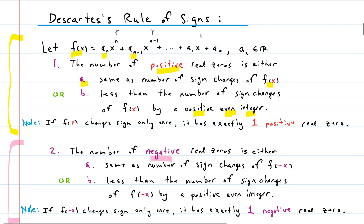One last side note: if f changes sign only once, it has exactly one positive real zero. Now let's look at the negative real zeros. The cool thing is it's very similar to what we just discussed for the positives, with one slight change: you take f and you plug in negative x for all of the variables. Then you do the same thing — you look at how many sign changes there are. The number of negative real zeros is either the same number of sign changes as you find in f of negative x, or it's that number less a positive even integer — so again, you keep subtracting two. And if the sign changes only once, then you have exactly one negative real zero.